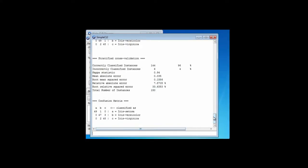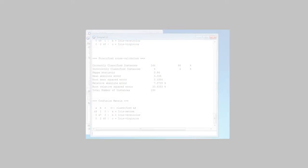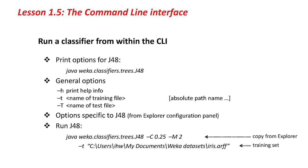There we go. This is the result — we've seen that kind of thing many times before. That's how you run classifiers in the simple command-line interface. Over here on the slide, this is what we did: we copied the classifier name and options from the Explorer, and then we put the training set afterwards manually. That's a good way of using the command-line interface.